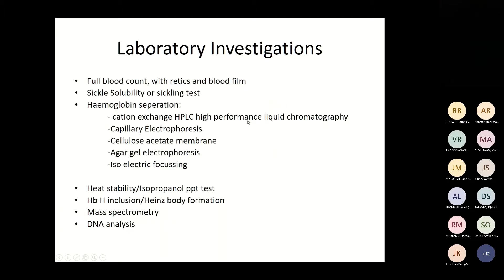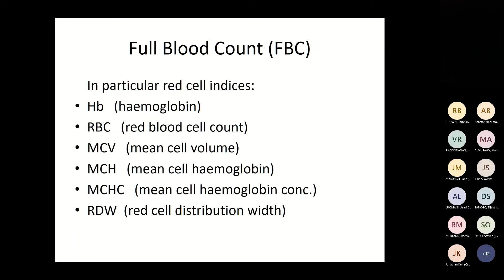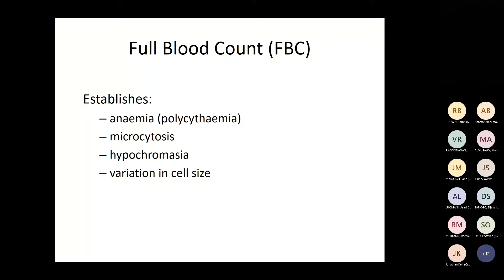From the laboratory side we look at a full blood count and blood film, a sickle solubility or sickling test, HPLC, capillary electrophoresis, cellulose acetate membrane, agar gel, and isoelectric focusing. For unstable haemoglobins we look at heat instability and isopropanol precipitation, and can look for inclusions and Heinz body formations. We also use mass spectrometry and DNA analysis. The red cell indices tell us if cells are low or high, if the patient is iron-deficient, thalassaemic, or has erythrocytosis.